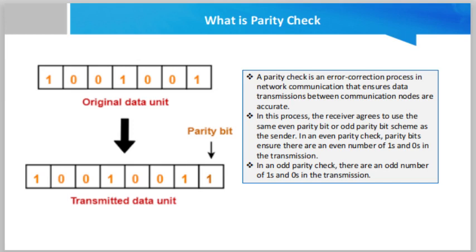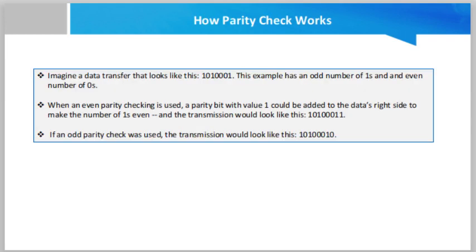Imagine a data transfer that looks like 1010001. This example has an odd number of ones and even number of zeros.